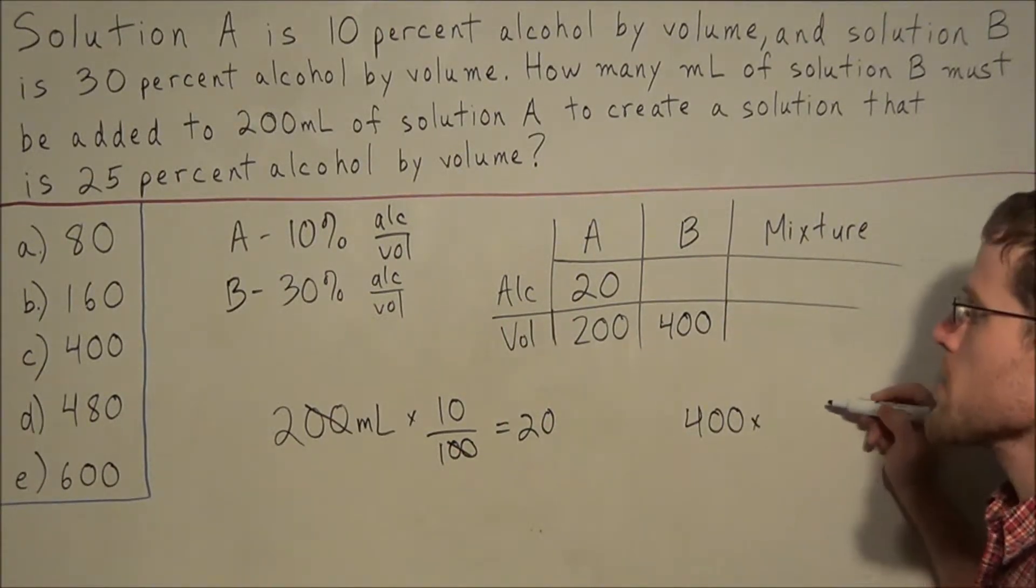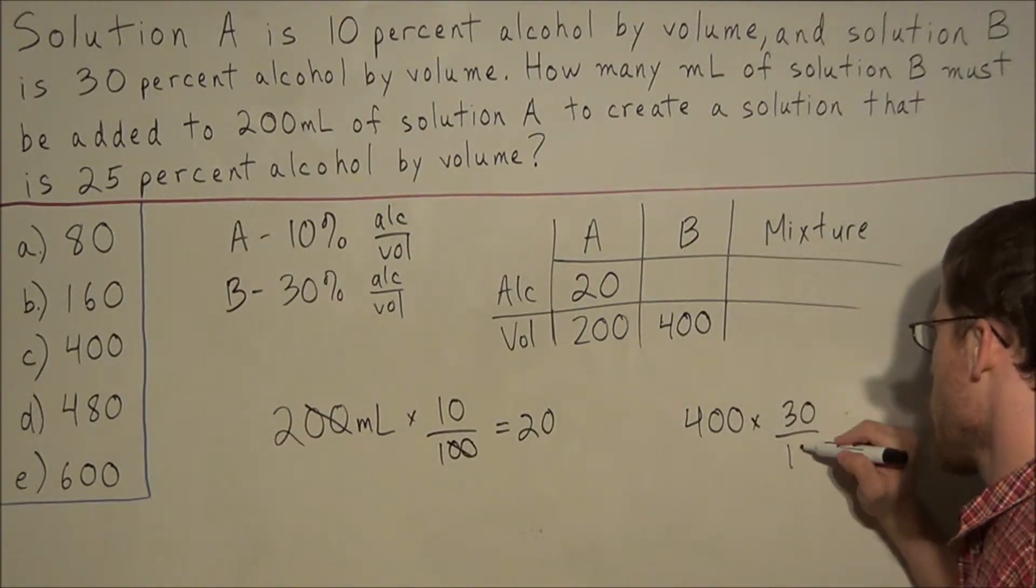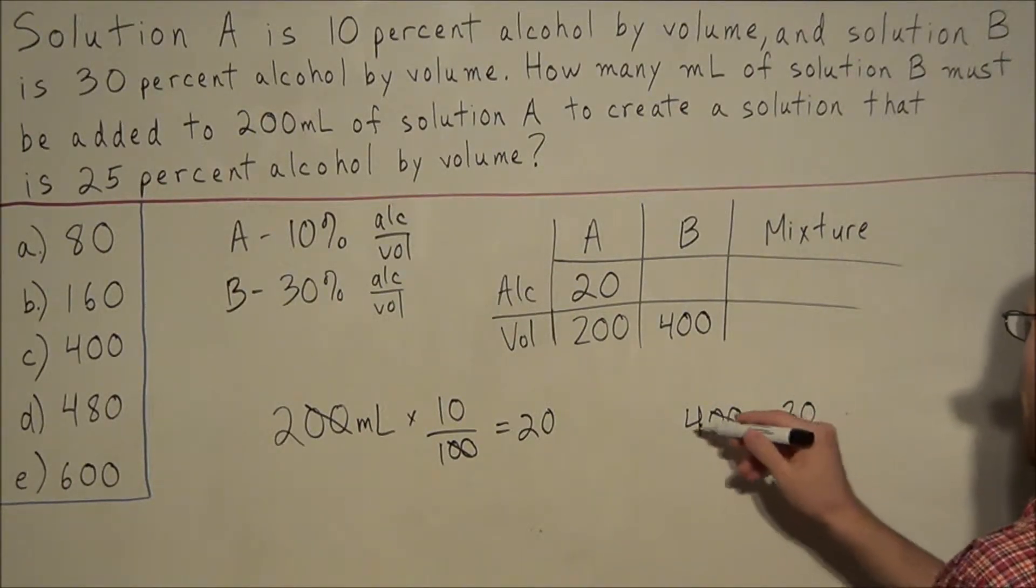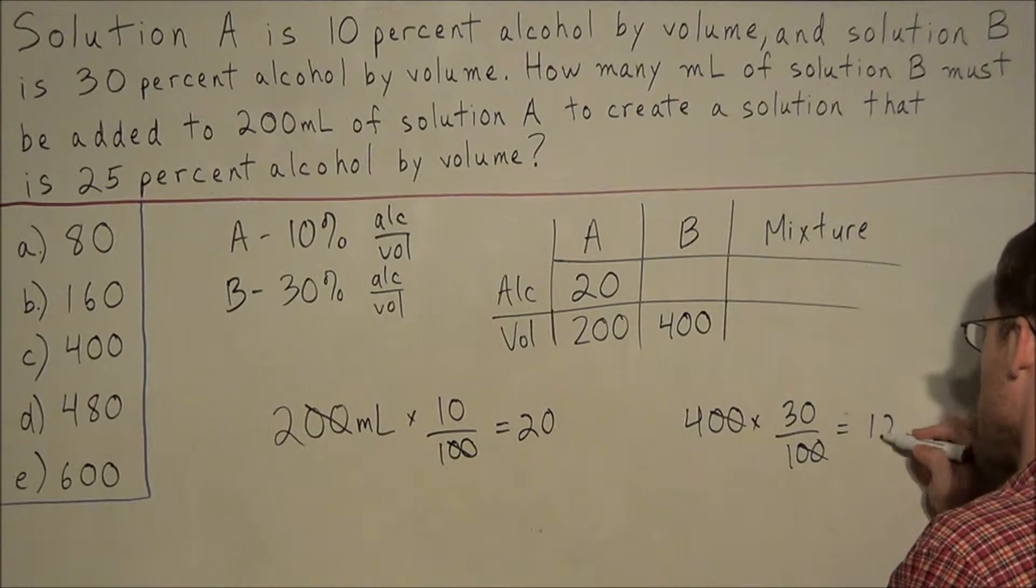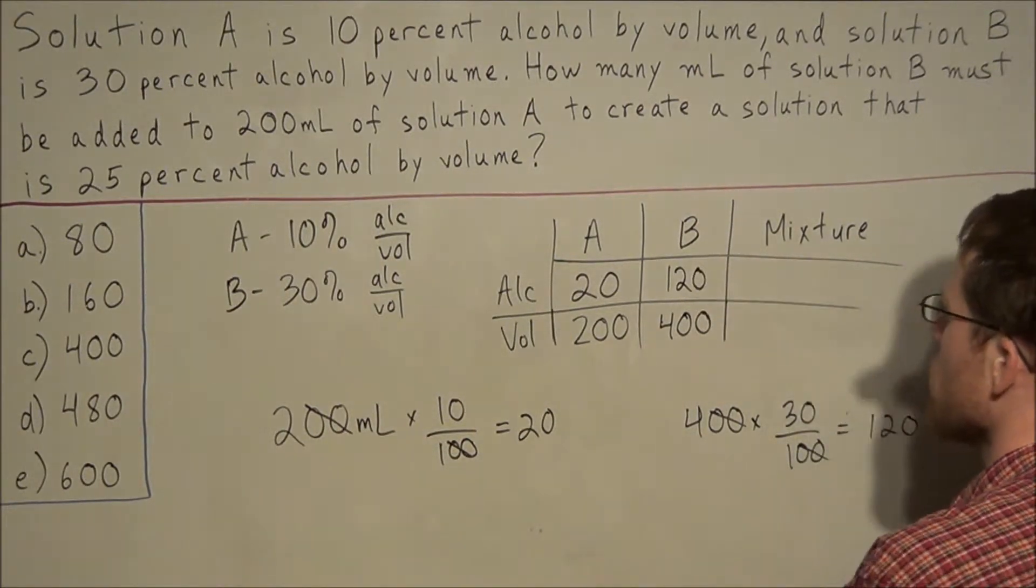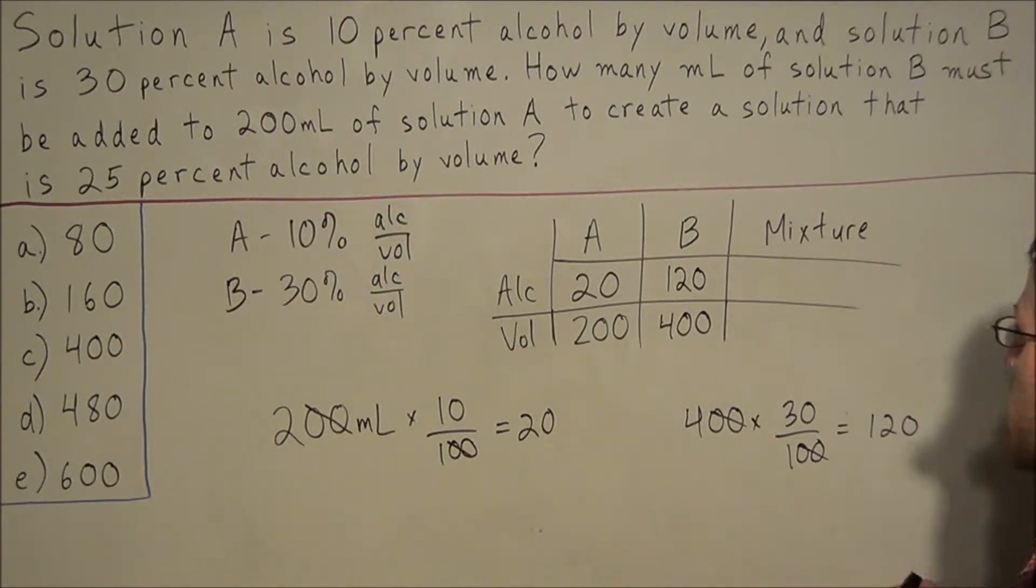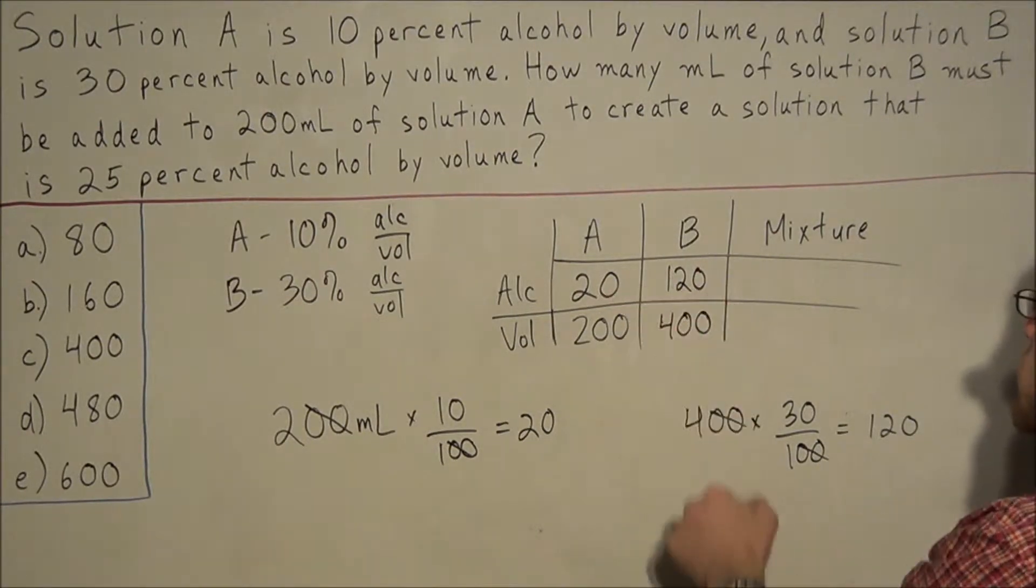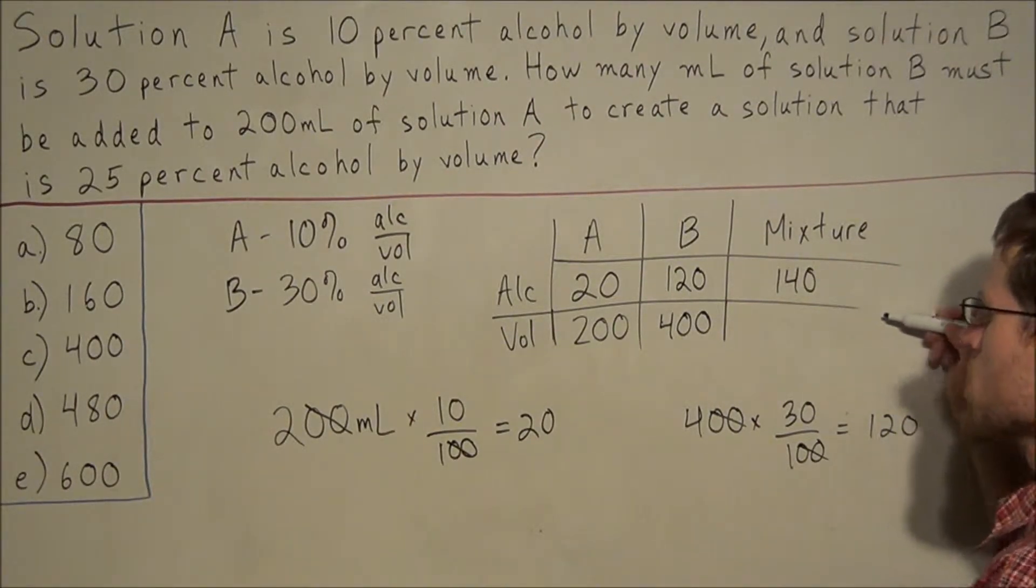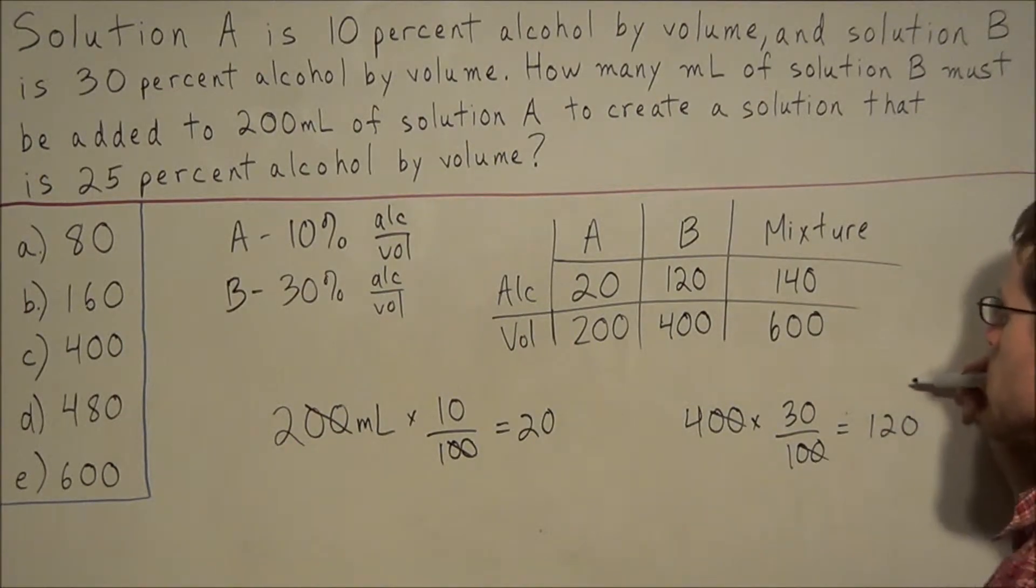Using this 400, we would be calculating 30% of 400. And if you observe 400 over 100 reduces to 4. 4 times 30 equals 120. So we would have 120 milliliters of alcohol in 400 milliliters of solution B.